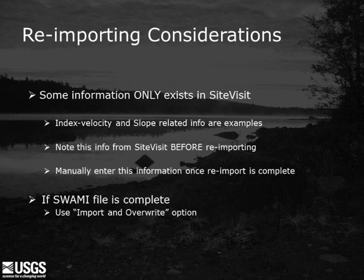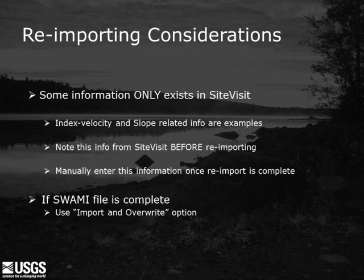When reimporting a SWAMI file into SiteVisit, there are some considerations to keep in mind. Some activities only exist in SiteVisit and not in SWAMI, such as information related to index velocity or slope. You will need to note this information before reimporting your updated SWAMI file, then enter it back into SiteVisit after reimporting. If the edited SWAMI file is complete — either using Method 2 of making all edits in SWAMI, or no edits have been made in SiteVisit since the original import — then the Import and Overwrite option should be used.